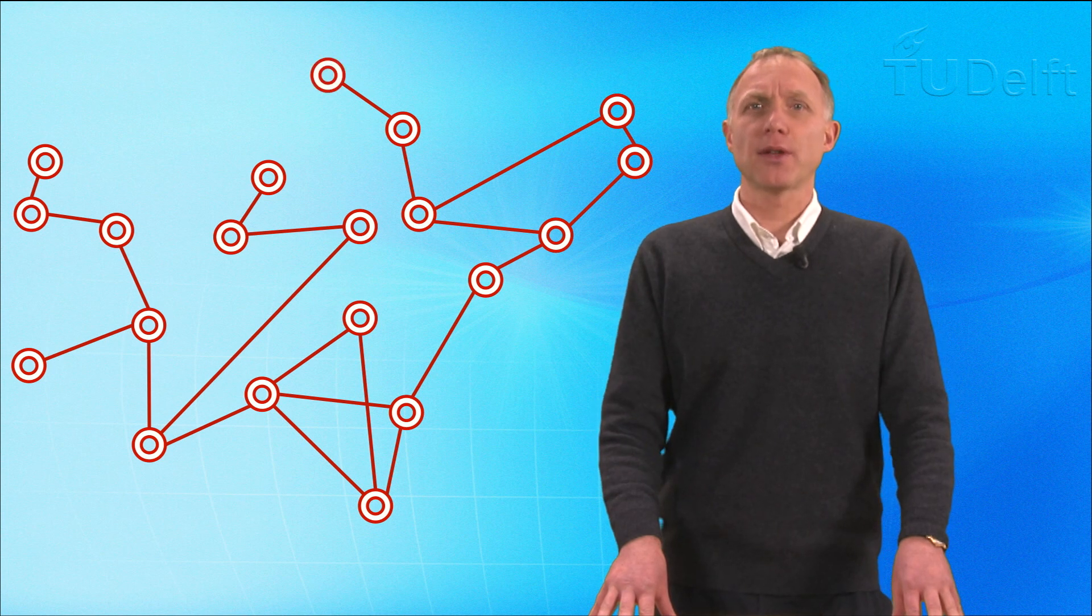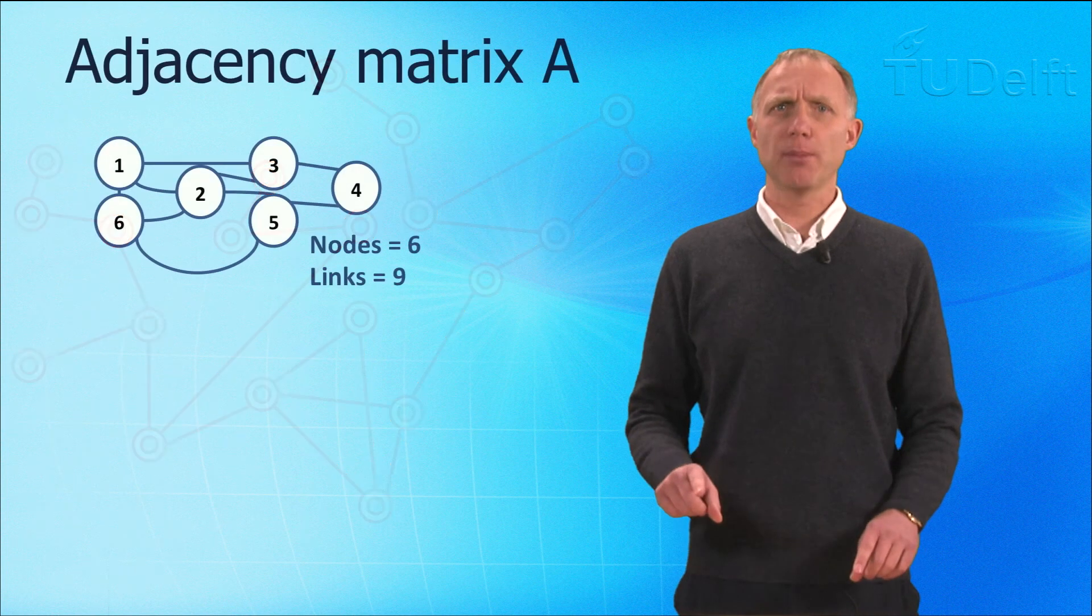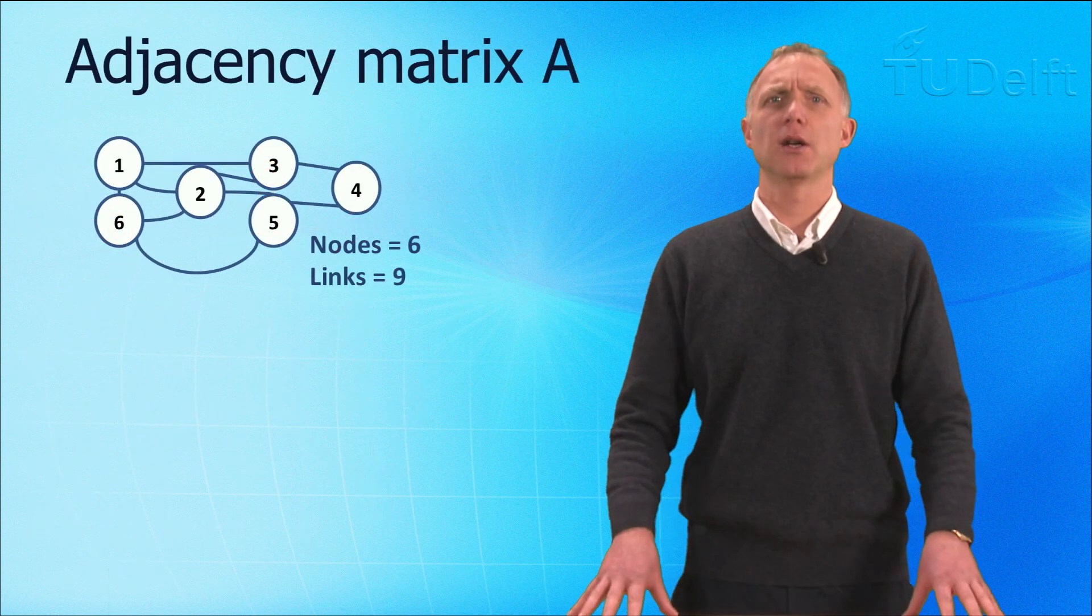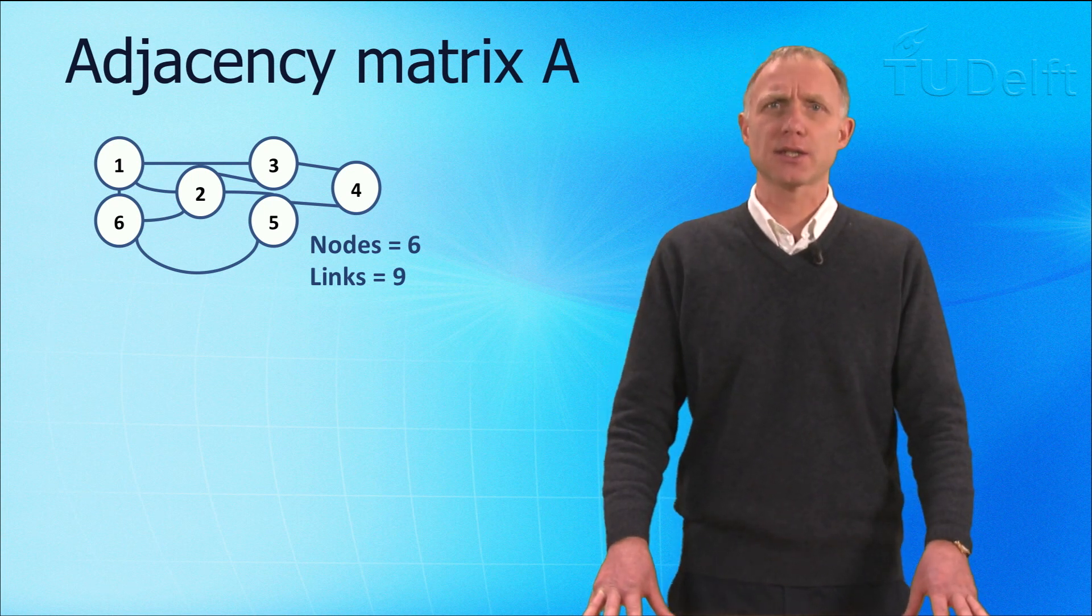Any network can be represented as a 0-1 matrix, called the adjacency matrix. As an example, we have drawn a small, undirected network with N is 6 nodes and L is 6 links.